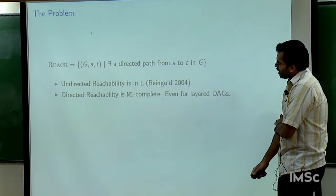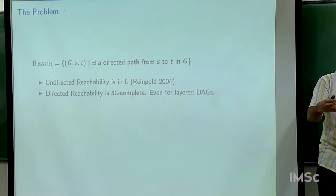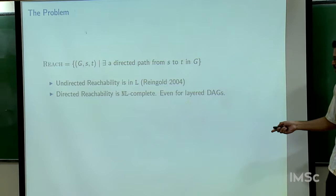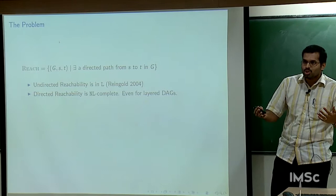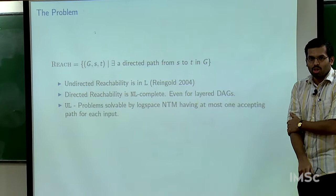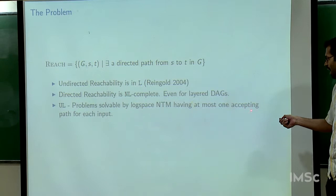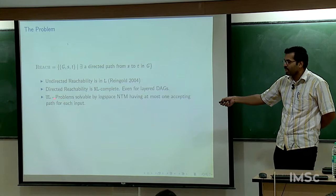If you believe NL equals L, one natural approach is to identify some property of deterministic log space. For example, a deterministic computation has exactly one accepting path. This separates out as unambiguous log space — problems solvable by log space non-deterministic machines with at most one accepting path. Clearly, L is included in UL, and UL is contained in NL.